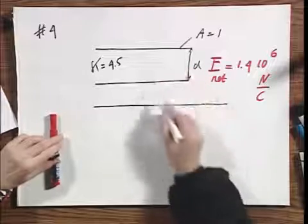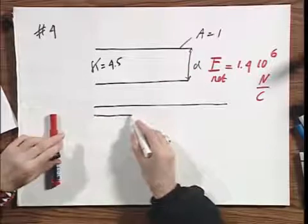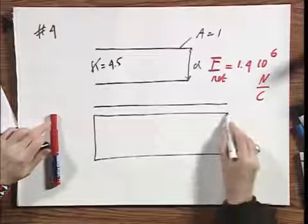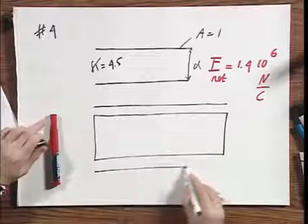Here, the top plate. I make artificially a gap, but the gap is not there. Here is the dielectric. And again I make here artificially a gap.